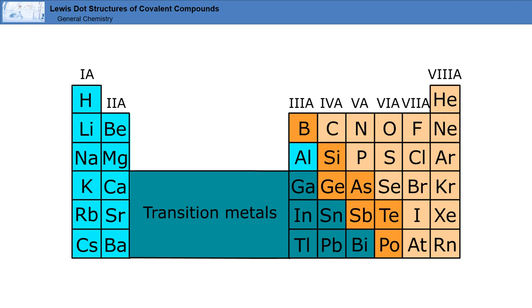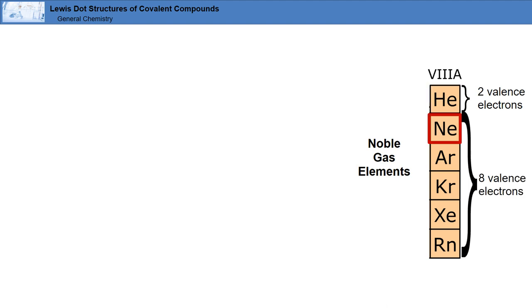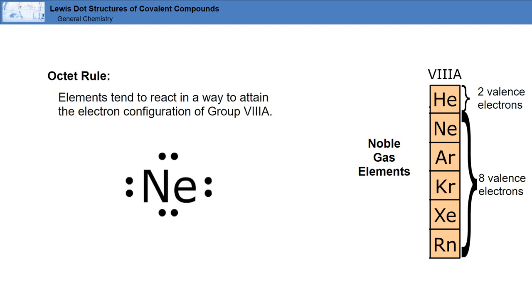Next, we'll explore the octet rule. Noble gas elements in group 8a have either two valence electrons, like helium, or eight valence electrons, like neon, argon, krypton, xenon, and radon. These elements are extremely stable because they have full valence shells — two electrons for helium in the first row and eight electrons in each of the latter rows for the other noble gases. All of these gases represent the octet rule, which states that elements tend to react in a way to attain the same electron configuration as group 8a, the noble gases. Put another way, each atom wants to combine with other atoms until it reaches eight electrons in its valence shell.